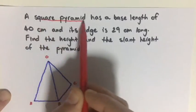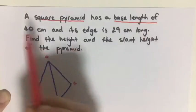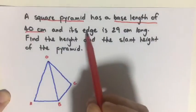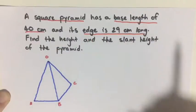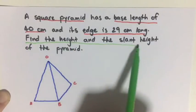So we have a square pyramid with a base length of 40 centimeters and its edge is 29 centimeters. Find the height and the slant height.